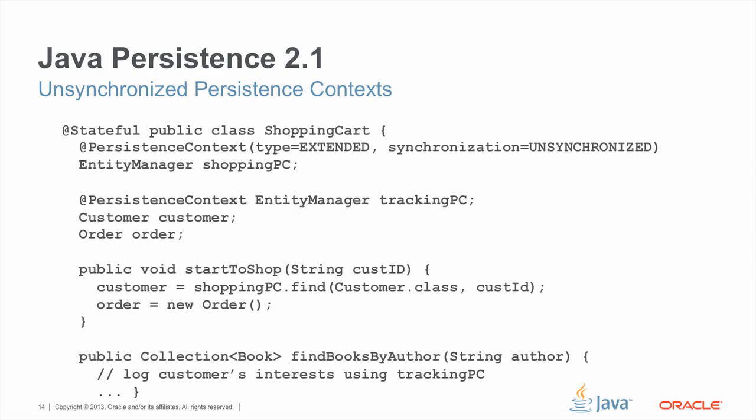Here's an example. A shopping cart is perhaps a canonical example of modeling a conversation. The shopping cart is modeled as a stateful session bean, which by default is transactional — if a transaction is not in progress when one of the methods of the shopping cart is invoked, one will be started automatically by the container. We have two persistence contexts in this example. The first is going to be used to model our shopping activities. It is an extended persistence context, so it lasts the duration of the shopping cart. And it's also unsynchronized, so it will not be joined to or flushed with the transactions in progress unless you explicitly join it to those transactions. The second persistence context is a tracking persistence context, which by default is synchronized with the transactions in progress, and we're going to use it to track the activities of the customer.